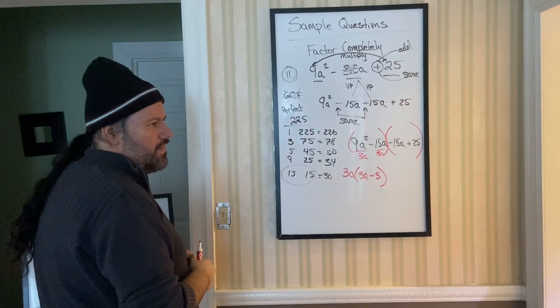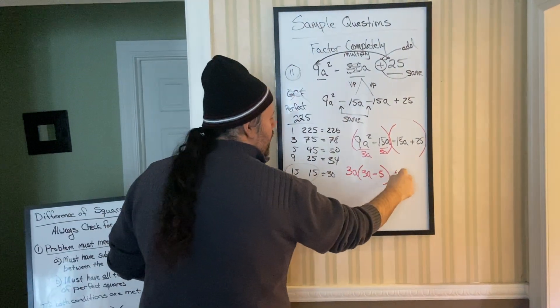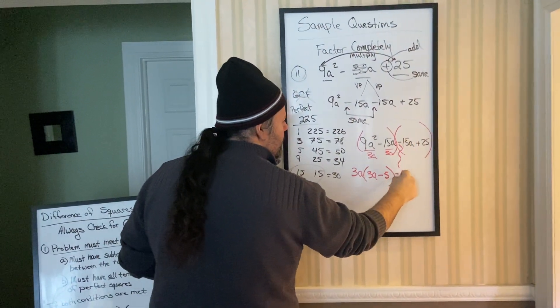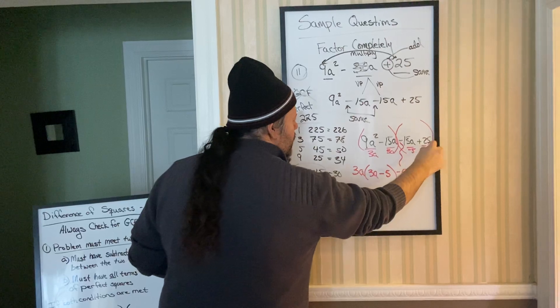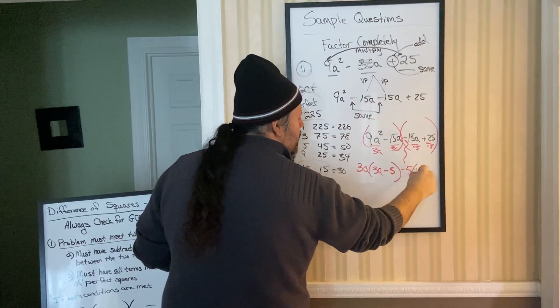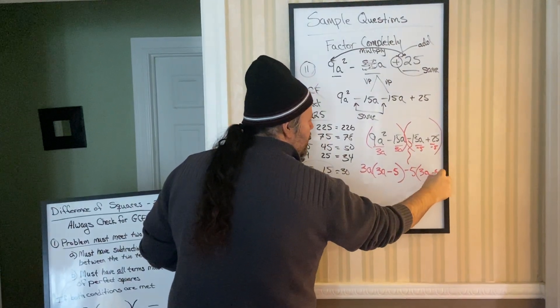Here, they have a GCF. They both have a 5. And because it starts with a negative, take out a negative 5 out of each term. When you do that, you're left with 3A minus 5.